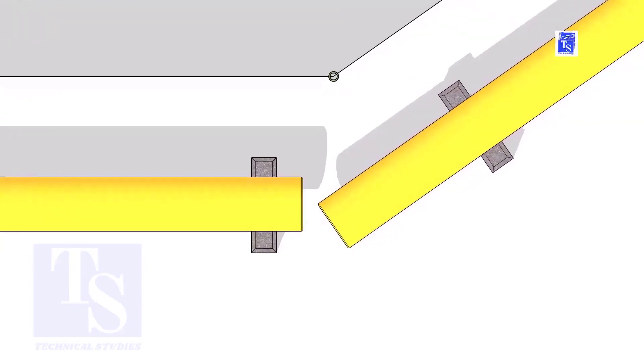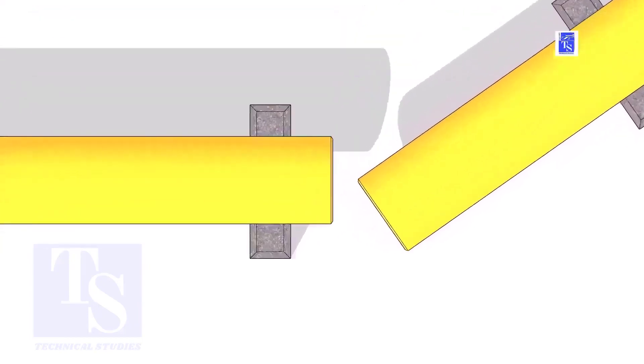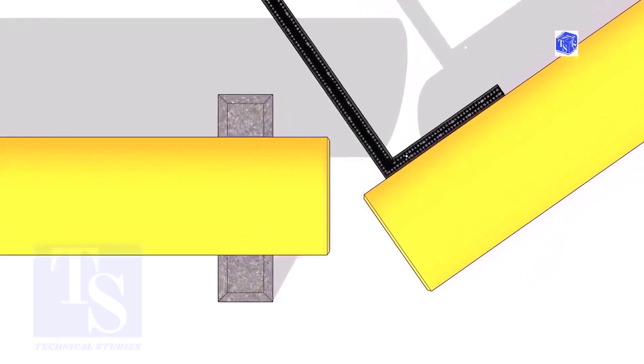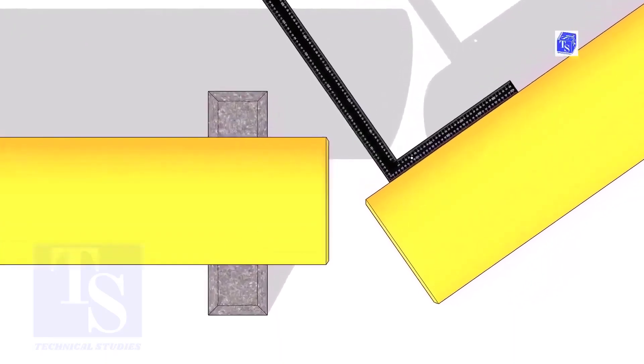It's not necessary that the center lines of both pipes are in a line. Hold a right angle on the pipe as shown. Hold a scale on the other pipe as shown.